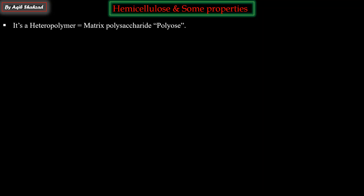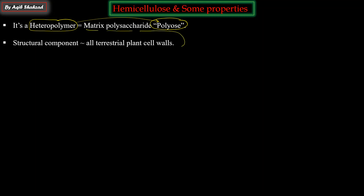Now let's start. The first thing about hemicellulose is that it is a heteropolymer - that means it's made up of more than one type of monomeric unit. Because of this, it is also called polyose, meaning it's made up of many different types of sugars. It is a cell wall matrix polysaccharide and a structural component found in almost all terrestrial plants.